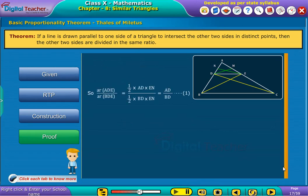So, by dividing area of triangle ADE with area of triangle BDE, we get equation 1. We also observe that area of triangle ADE is equal to half into AE into DM and